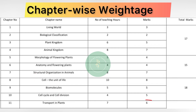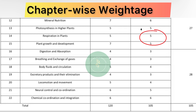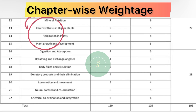Moving on to unit number 4, chapter number 11, Transport in Plants — marks allotted here is 6 marks. Chapter number 12, Mineral Nutrition — marks allotted here is 6 marks. Chapter number 13, Photosynthesis in Higher Plants — marks allotted here is 5 marks. Chapter number 14, Respiration in Plants — marks allotted here is 5 marks. Chapter number 15, Plant Growth and Development — marks allotted here is 5 marks. So from unit number 4, the total marks allotted in the question paper will be 27 marks.